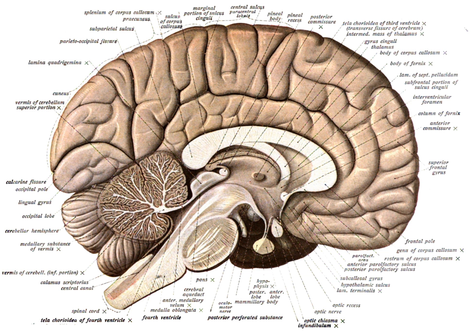Glial cells maintain homeostasis, produce myelin, and provide support and protection for the brain's neurons. Some glial cells can even propagate intercellular calcium waves over long distances in response to stimulation, and release gliotransmitters in response to changes in calcium concentration. The extracellular matrix also provides support on the molecular level. At the organ level, the nervous system is composed of brain regions, such as the hippocampus in mammals or the mushroom bodies of the fruit fly.